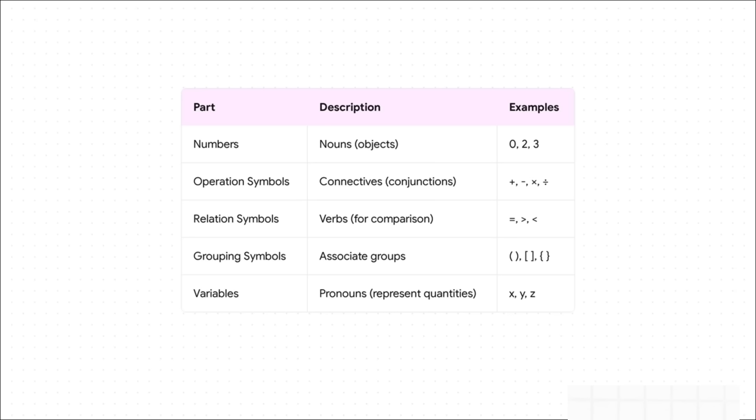Grouping symbols, like parentheses, just tell us what ideas belong together. And finally, you've got variables, your x, y, and z. Those are just the pronouns, standing in for a number we don't know yet.